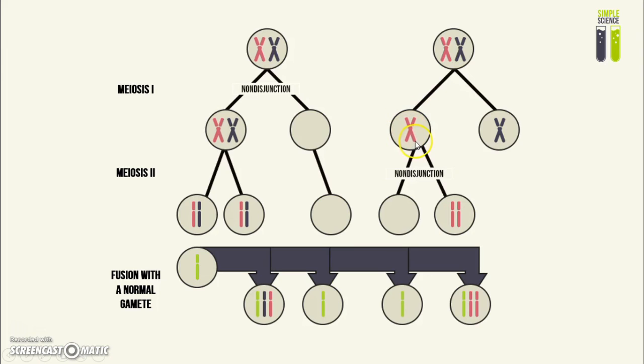Instead of each chromatid moving to opposite poles of the cell in order to be divided into two different cells, they both move to the same pole. So then they end up in the same cell.